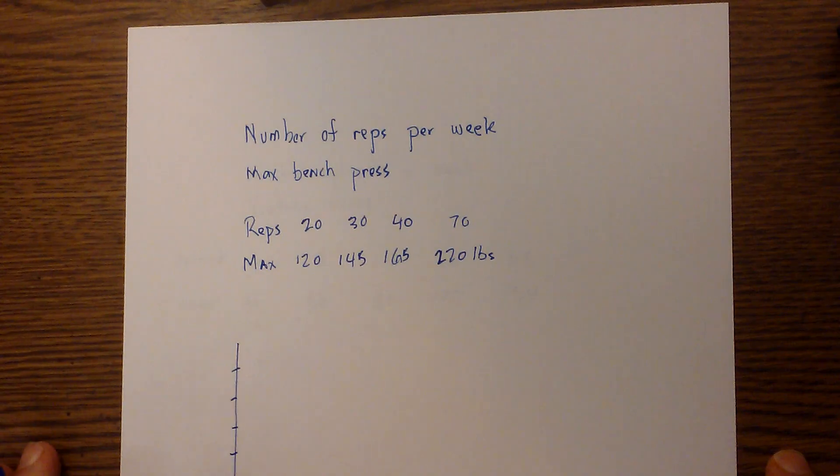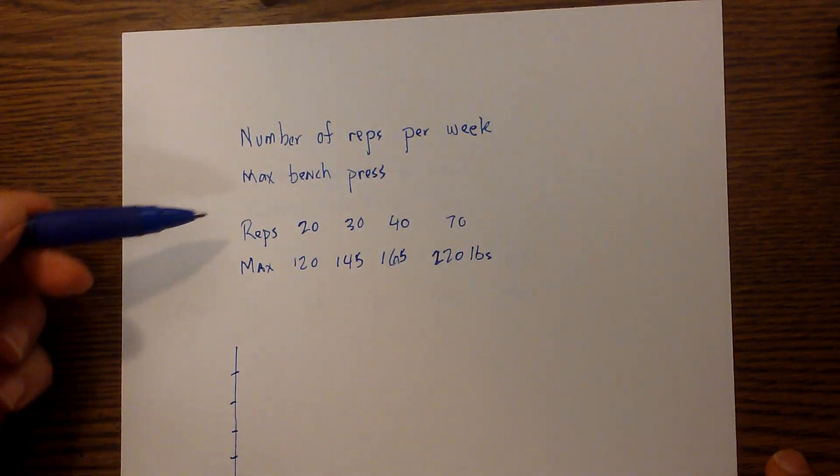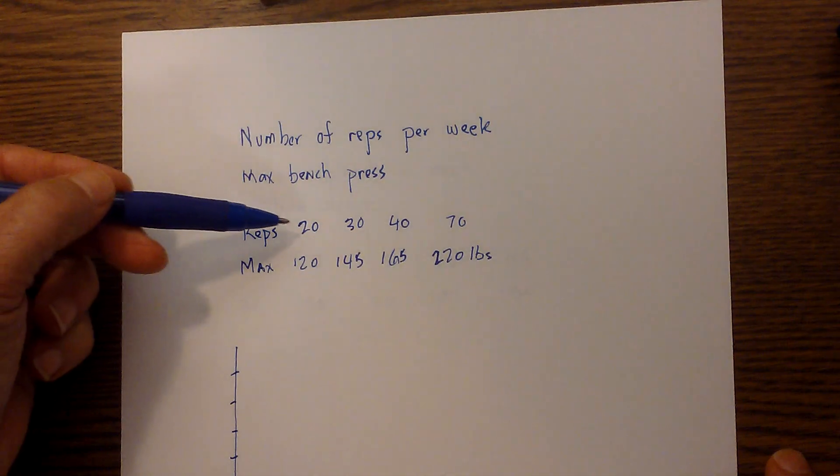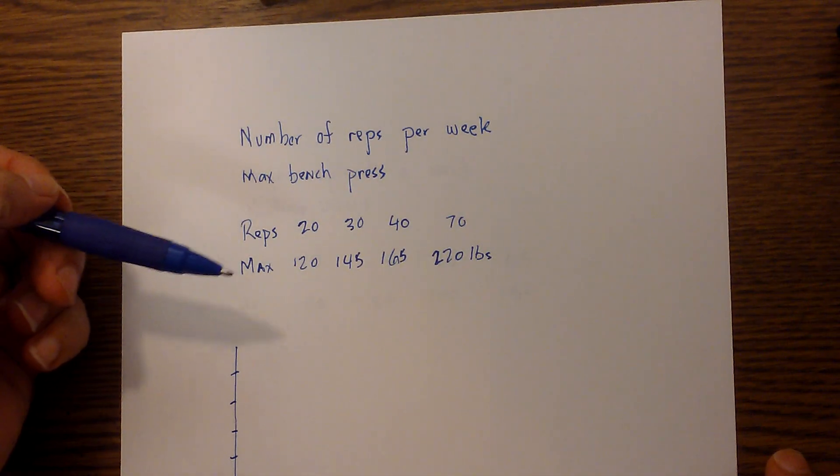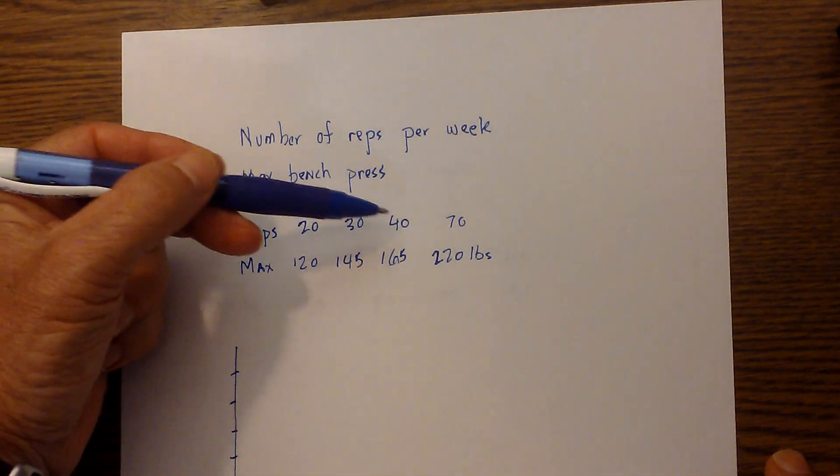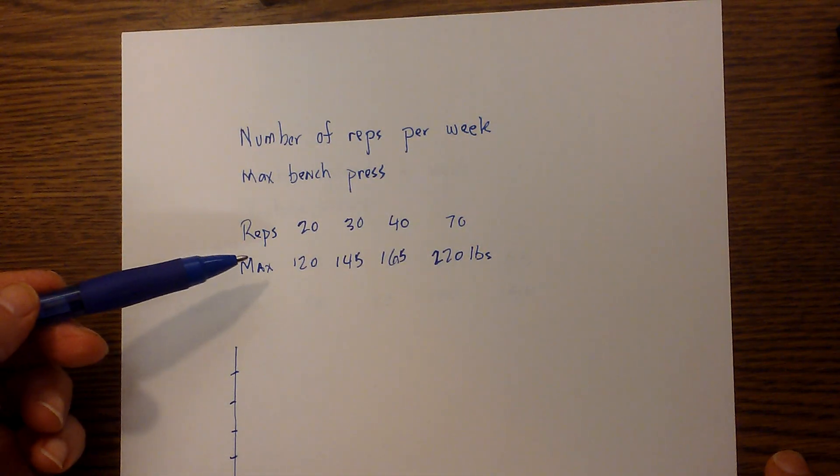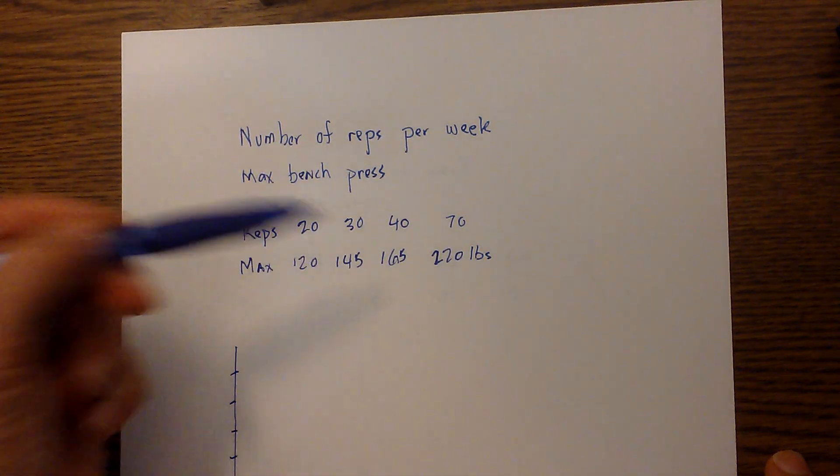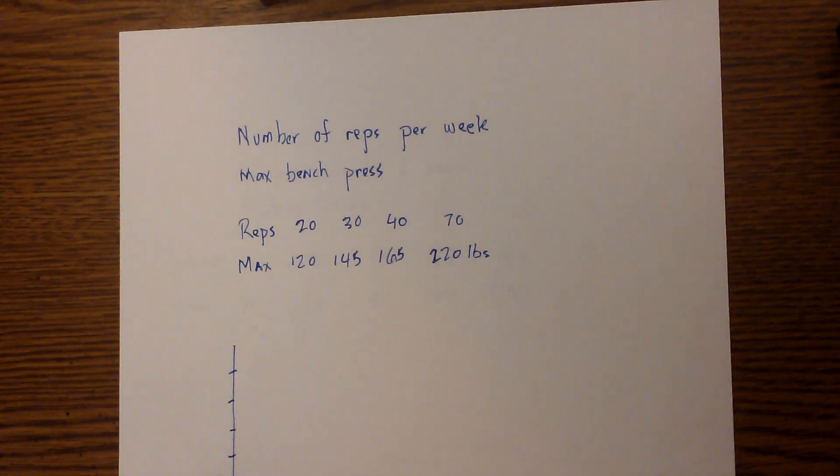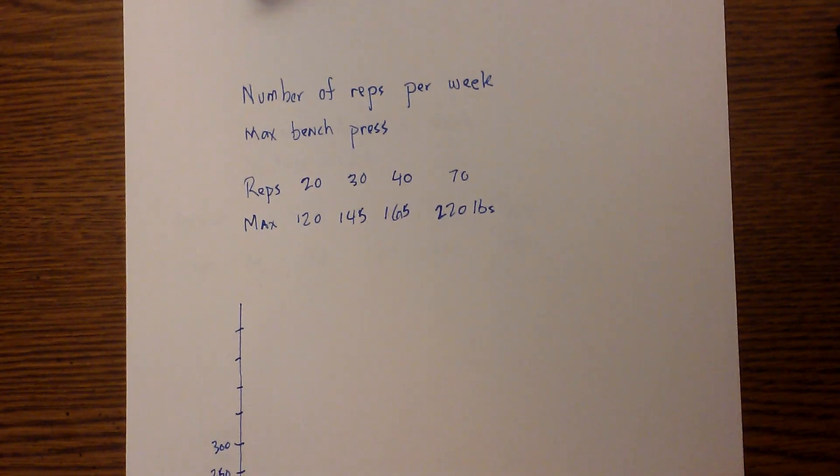I've collected some data and I have reps per week: 20 reps, then 30, then 40, then 70. And then this is what their max bench press is. So now I'd like to graph this so that I have a visual representation of the data.